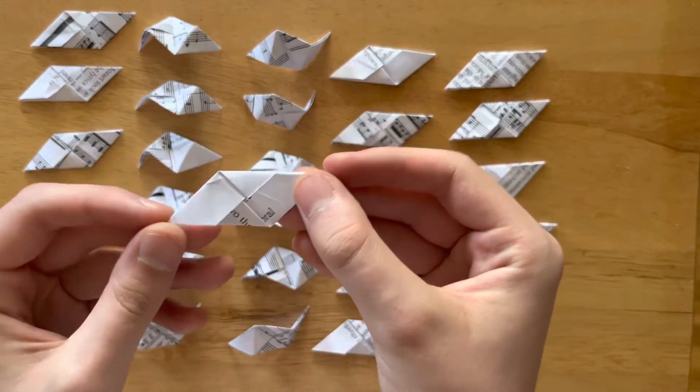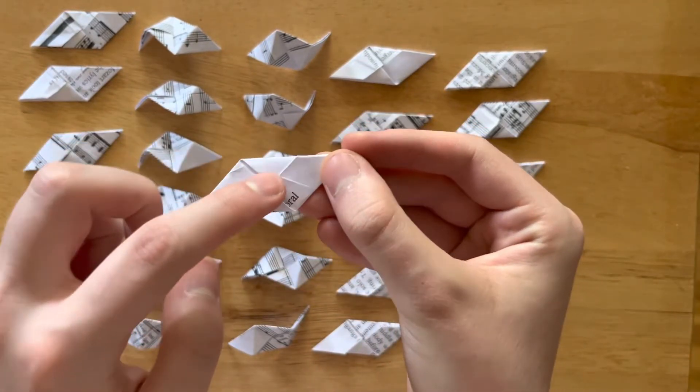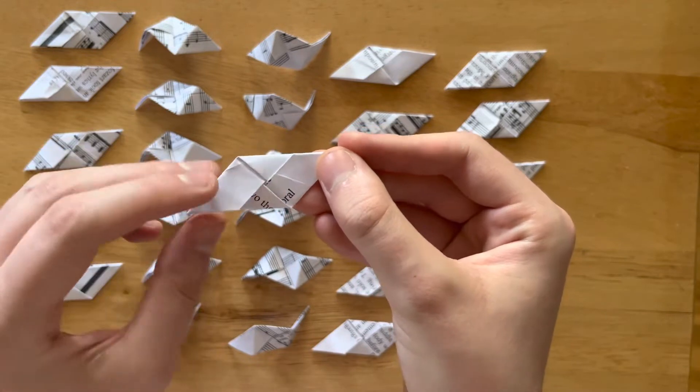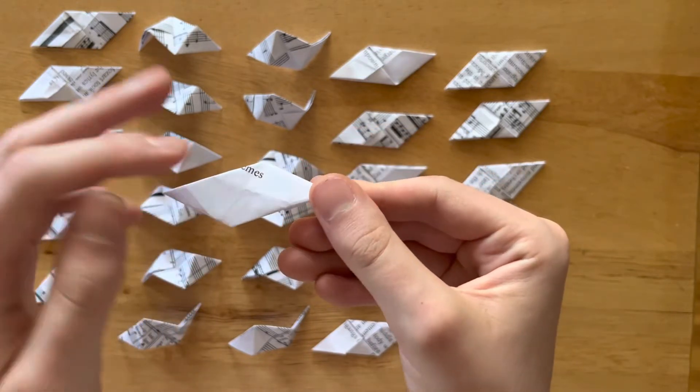how to get them into the correct orientation. So you have your Sonobe unit with the little crisscross on it with the pockets, and you have the flat side.